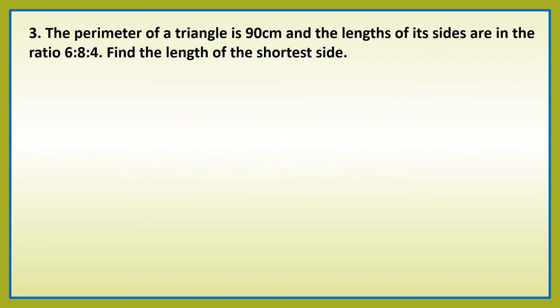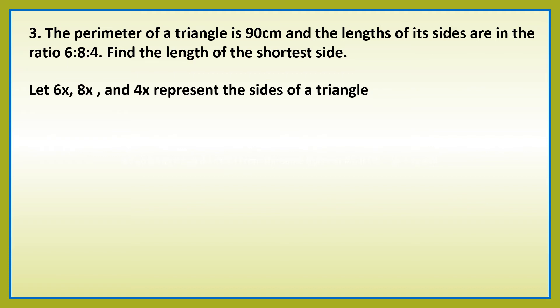Number 3: the perimeter of a triangle is 90 centimeters, and the lengths of its sides are in the ratio 6 is to 8 is to 4. Find the length of the shortest side. Let 6x, 8x, and 4x represent the sides of a triangle. 6x plus 8x plus 4x is equal to 90.